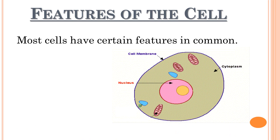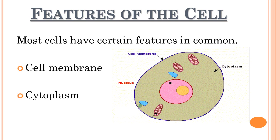Let's talk about the features of the cell. There are multiple structures that are common among most cells. The first one is the cell membrane, which acts as a boundary to protect the structures present inside the cell. The second feature is cytoplasm, which is a jelly-like colorless substance. The third one is the nucleus, which is also known as the brain of the cell. You can refer to the diagram to understand the location of these structures.